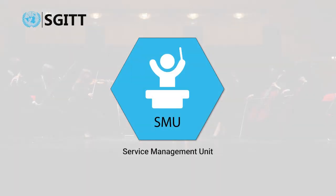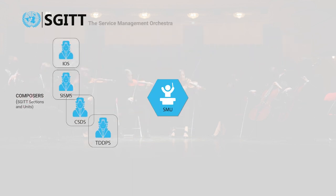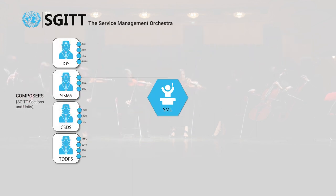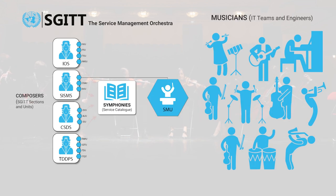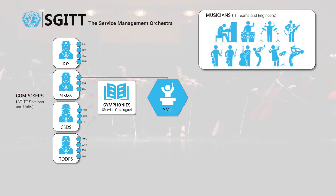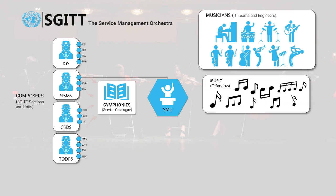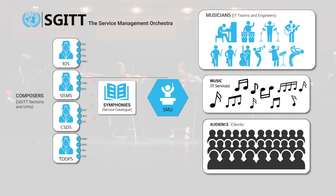The Service Management Unit acts as the conductor in this scenario. The composers are the other SGIT sections and units that develop products and services — the symphonies. The musicians are the IT teams and engineers that breathe life into the composers' creations by performing the music, which represents the IT services, products, and platforms that address the business needs for the audience.